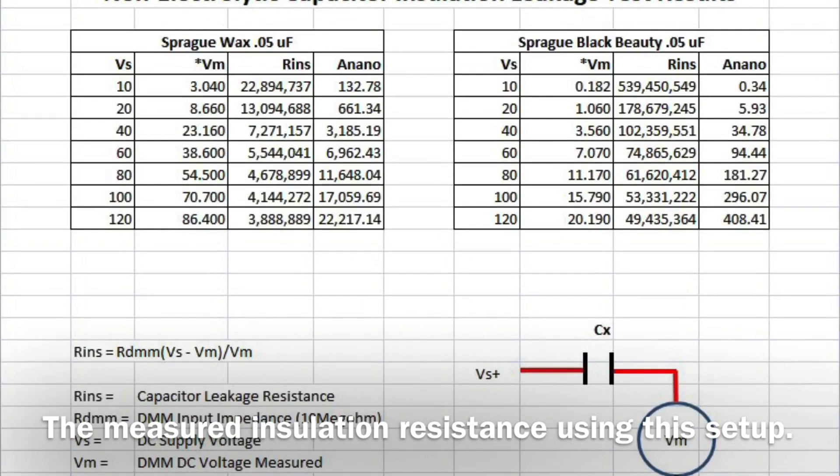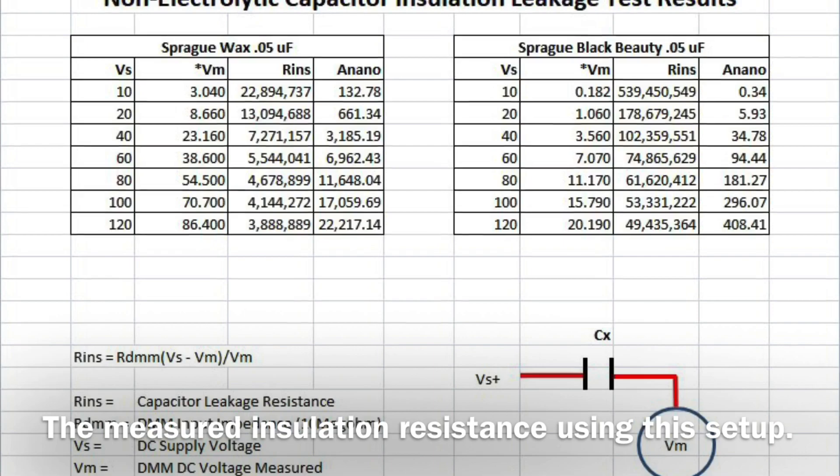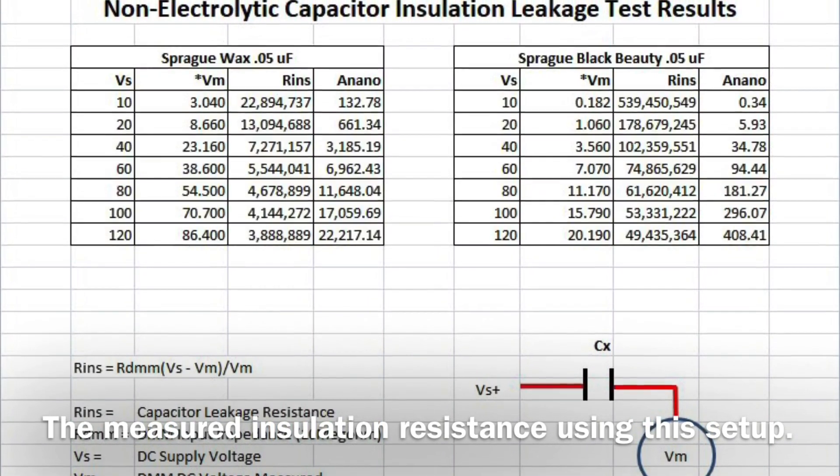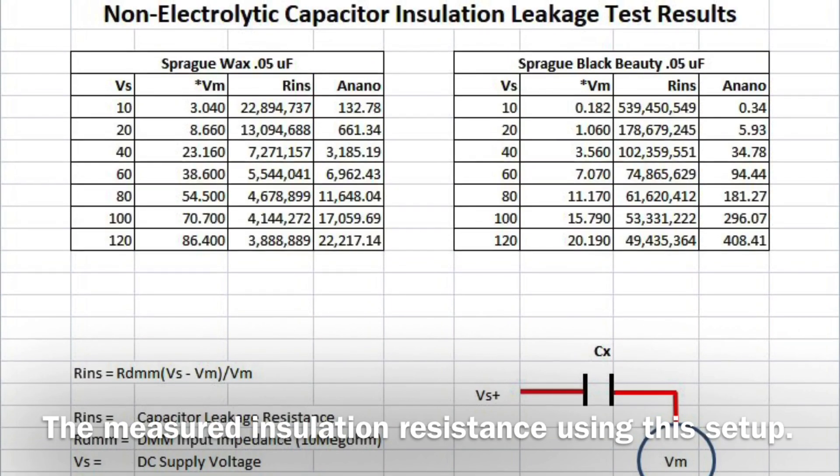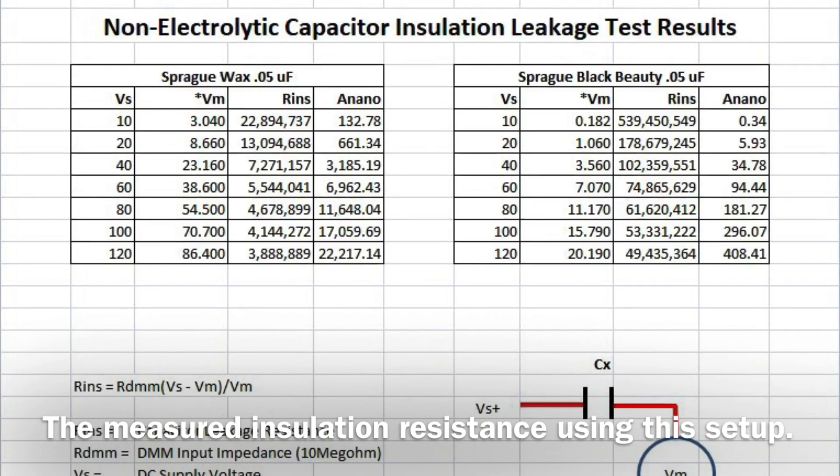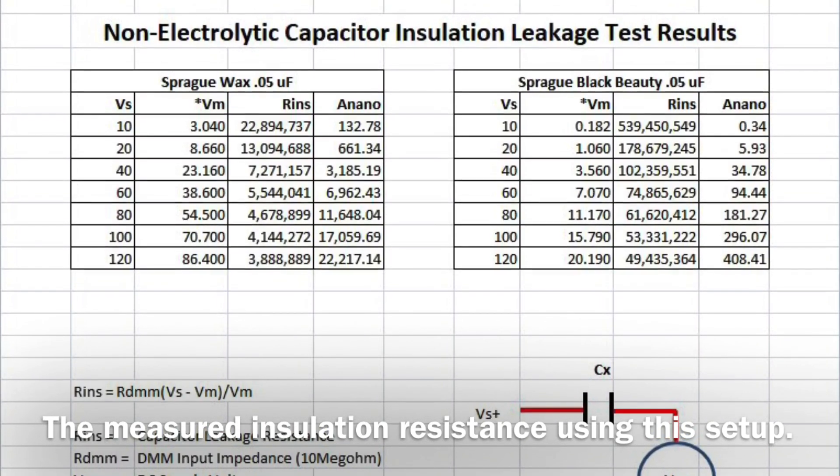Transistors are not near as forgiving as tube or valve type circuits. In the transistor world, any little bit of leakage can cause the transistor to cut off or really just kind of run wild.